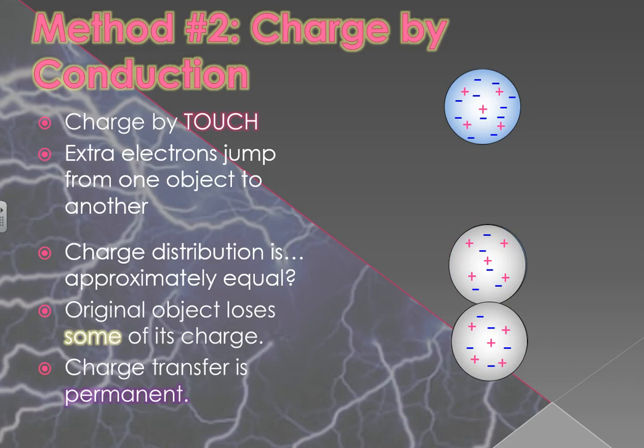In conduction, charge transfer is permanent. If you touch something, you permanently give away some of your charge, and it can go and do with that charge whatever it sees fit. This sounds almost redundant, certainly not worth mentioning, but when we get to method number three, induction, we'll find a method of so-called charging where the charge transfer is only temporary.